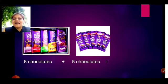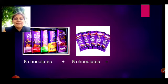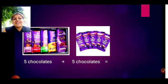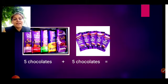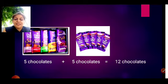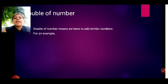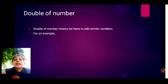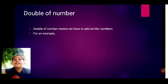Here are the chocolates — five chocolates plus five chocolates. Here are the dairy milk chocolates. So five plus five, five chocolates plus five chocolates is equal to ten chocolates, right? So double of a number means add the similar numbers.